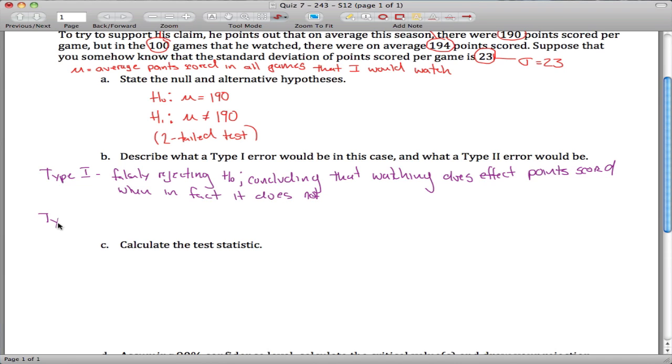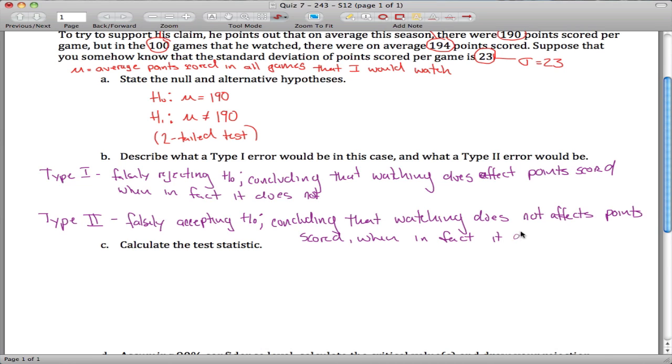And a type 2 error is kind of the flip of that. It's falsely accepting the null hypothesis. That is concluding that watching does not affect points scored when, in fact, it does. Something like that. Your words could be slightly different with that idea.